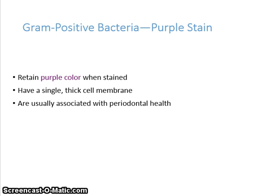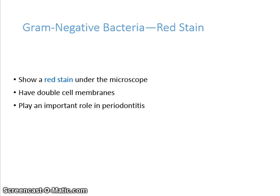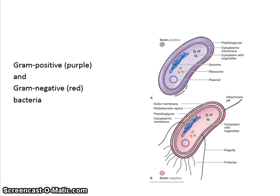Gram-positive bacteria retain the purple color when stained. They have a single thick cell membrane and are usually associated with periodontal health. Gram-negative bacteria show red staining under the microscope. They have double cell membranes and they play an important role in periodontitis. This diagram shows the differences in gram-positive and gram-negative bacteria. For more information, see page 98, figure 6.1.